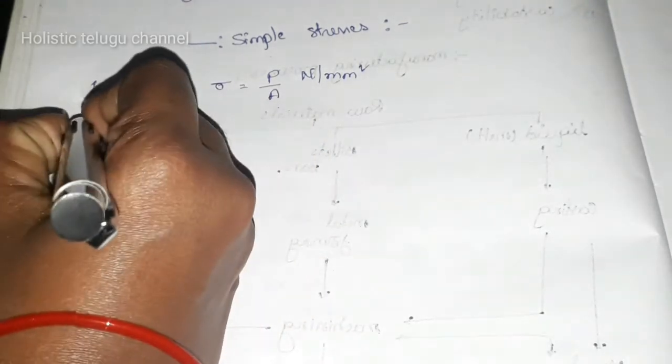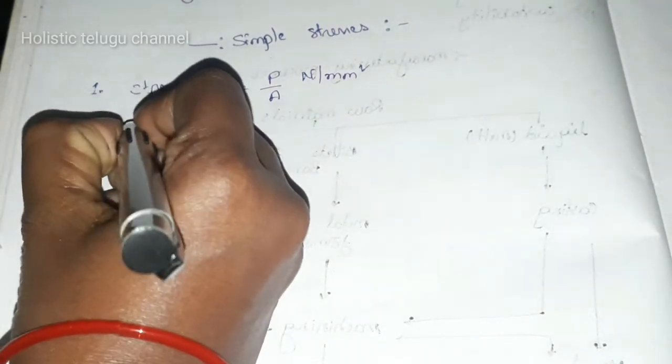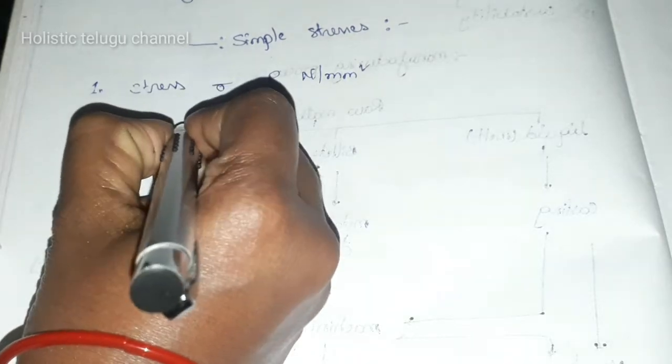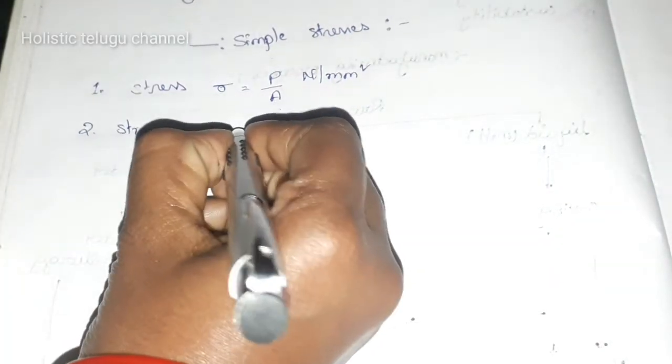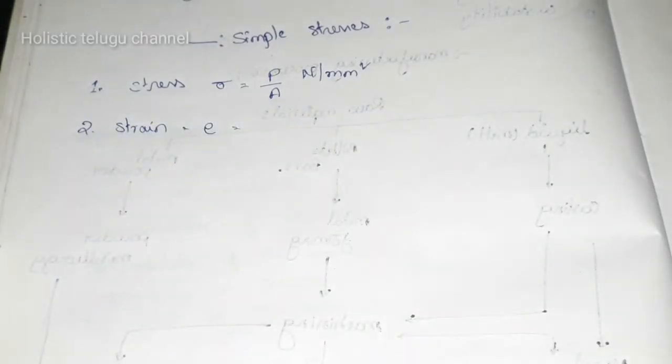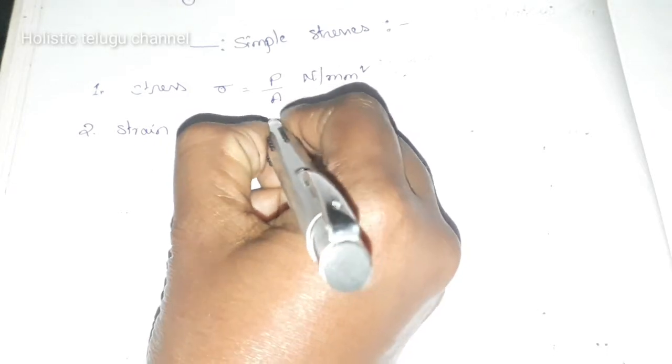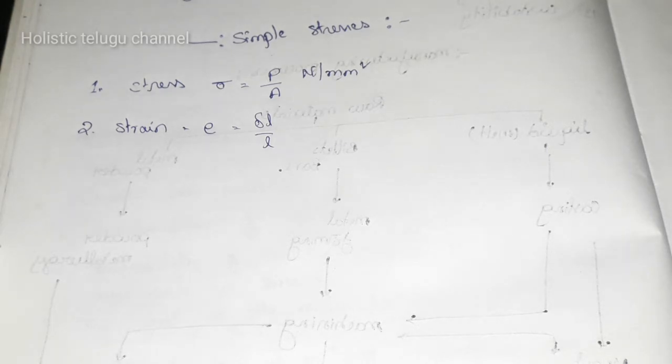Next, second one is strain. Strain is denoted by e. The formula is delta L by L, which is the change in length of the body divided by the original length of the body.